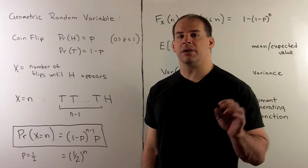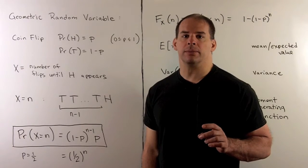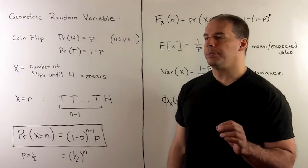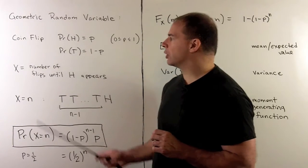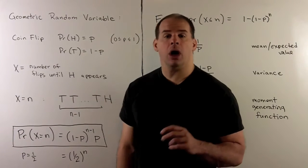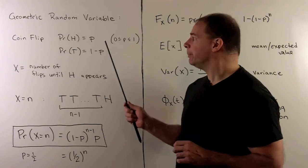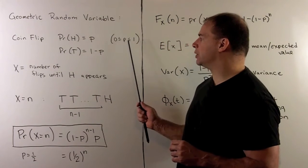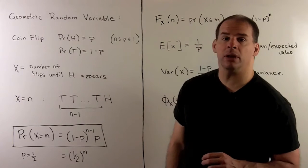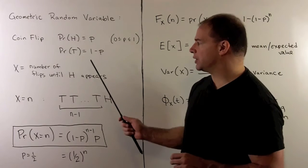Let's consider the basics of geometric random variables. Our scenario: we're going to consider coin flips. Our coin will have probability of heads equal to P, where P is between 0 and 1 inclusive. So the probability of tails is 1 minus P.